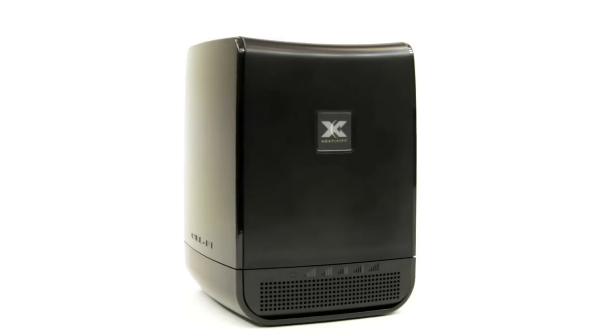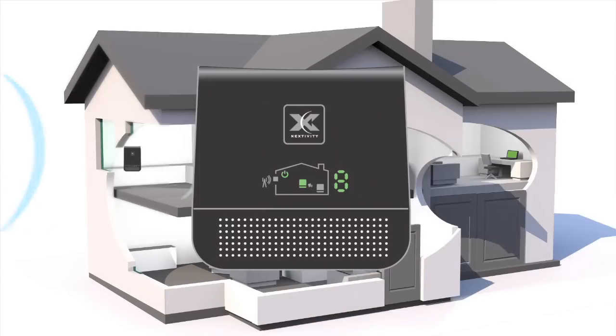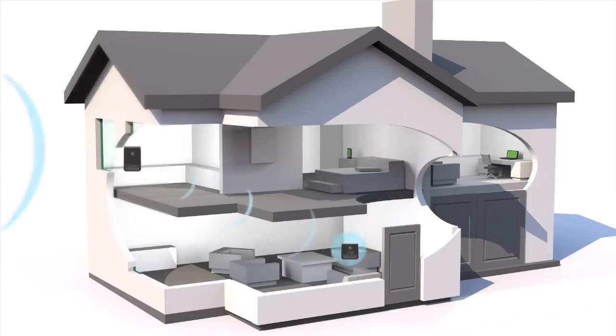Start with the window unit. Signal from your mobile network's tower reaches your home. The window unit collects that signal and passes it on to the coverage unit, where it's amplified throughout your home.